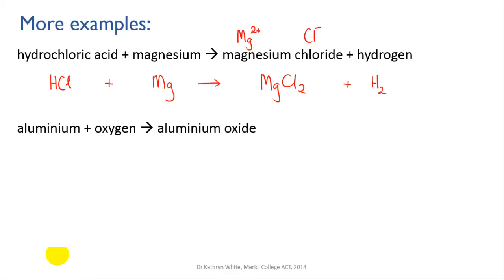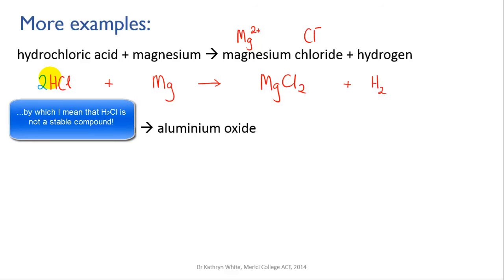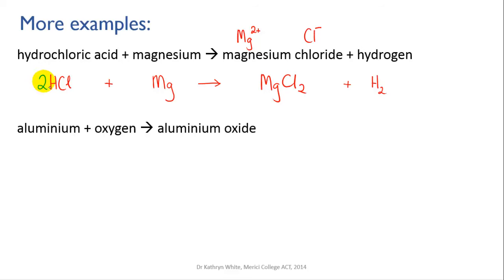Now balancing the equation. For hydrogen: on the left we've got one H, and on the right a hydrogen molecule has two hydrogen atoms — so one on the left, two on the right. Let's put a 2 in front of our HCl. Now we've got two hydrogens on the left and two on the right. Remember, you can't change the formula of hydrochloric acid to H2Cl — it just doesn't work. Now for chlorides: two HCl means two chlorides on the left. MgCl2 also has two chlorides, so that's balanced. And magnesium: one on the left and one on the right. Balanced.